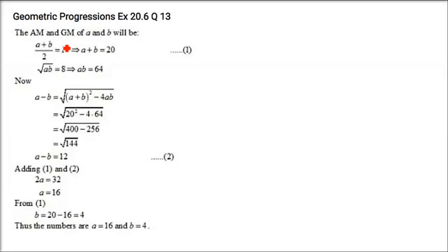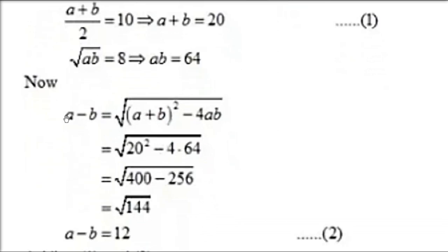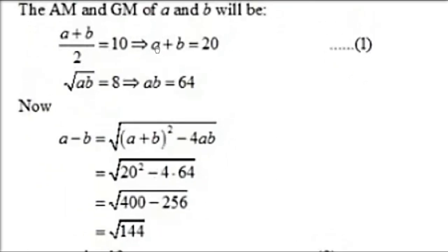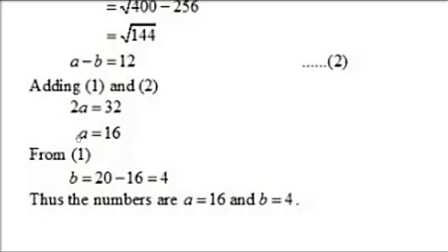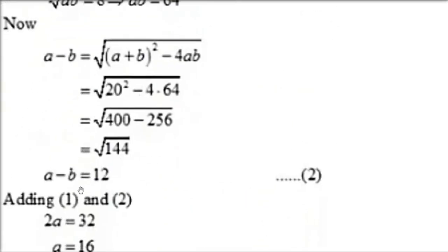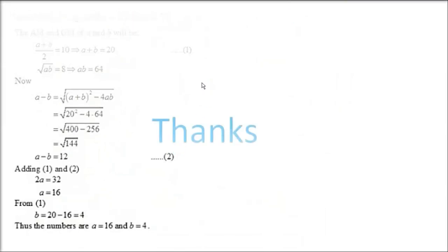If AM and GM of two positive numbers A and B are 10 and 8 respectively, find the numbers. (A+B)/2 = 10 so A+B = 20. √(AB) = 8 so AB = 64. Then A−B = √((A+B)² − 4AB) = √(400−256) = √144 = 12. Solving A+B = 20 and A−B = 12 gives A = 16 and B = 4.